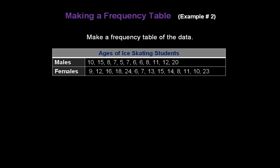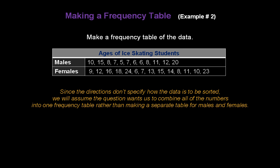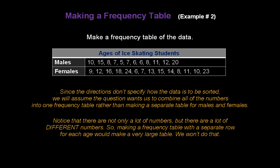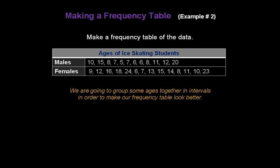Here's a table of data that lists the ages of ice skating students, broken out by males and females. We want to make a frequency table of this data. Since the directions don't specify how the data is to be sorted, we'll combine all the numbers into one frequency table rather than making separate tables for males and females. There are a lot of different numbers, so making a frequency table with a separate row for each age would make a very large table. Instead, we're going to group ages together in intervals to make our frequency table smaller and easier to read.